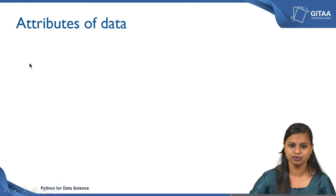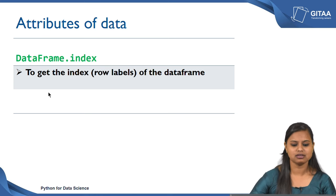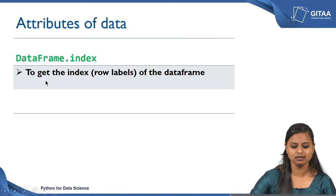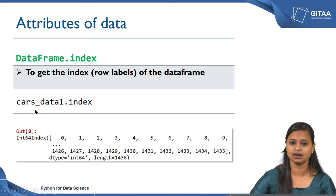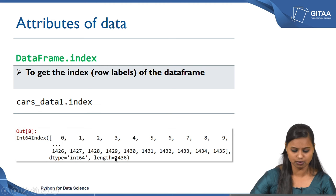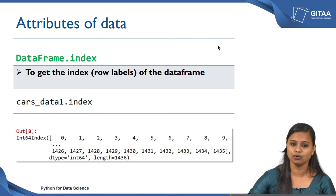Now we will see how to get attributes of data. Attributes give us basic information about the data. One is getting the index from the DataFrame — the syntax is 'dataframe.index'. Index here means row labels. Using 'cars_data_1.index' gives the output for the row labels of the DataFrame. The row labels range from 0 to 1435, where the length is 1436 — indexing in Python starts from 0 to n minus 1.